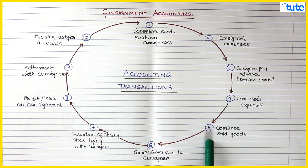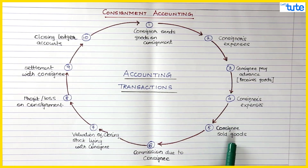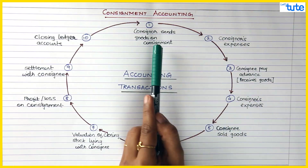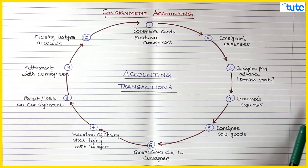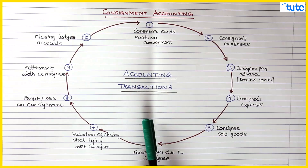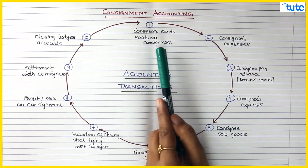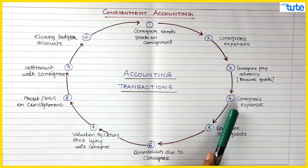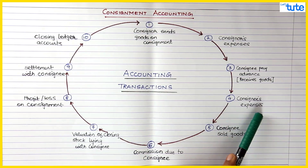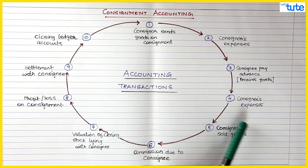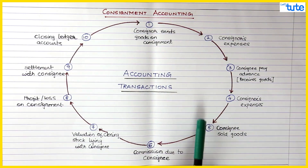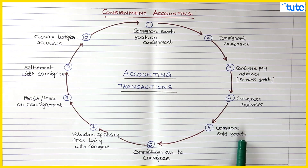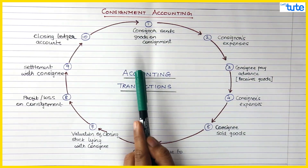Next, the consignee will sell those goods. All the expenses and sale of goods belong to the consignee's activities, so these will be recorded in the books of the consignee as well, because the consigner is going to reimburse those expenses. The sale proceeds are also going to be received by the consignee. So step five is: sales.